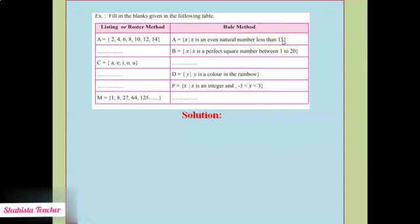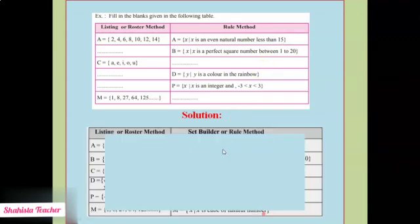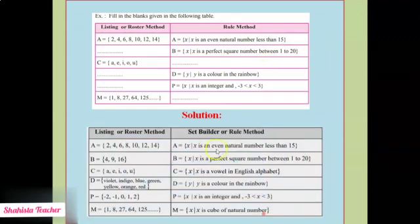Is that clear? Now we will check the solution. Yes — A = {x such that x is an even natural number less than 15}.